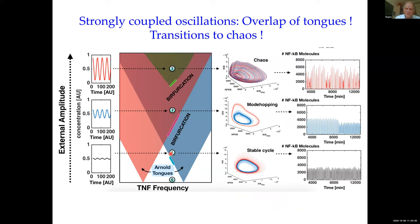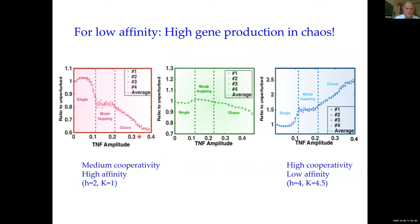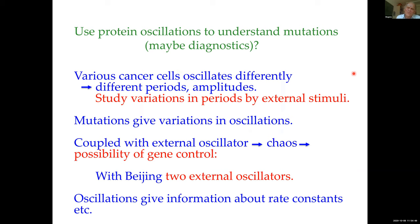Going from a single stable state, then one oscillation, to mode hopping — and pushing the TNF amplitude higher brings us into the chaotic state. Looking at a downstream gene with increased amplitude: with medium cooperativity and high affinity in chaos, gene production went down; with high cooperativity and low affinity in chaos, production went up. We were completely surprised by these results. We now think about whether we can use this in diagnostics.